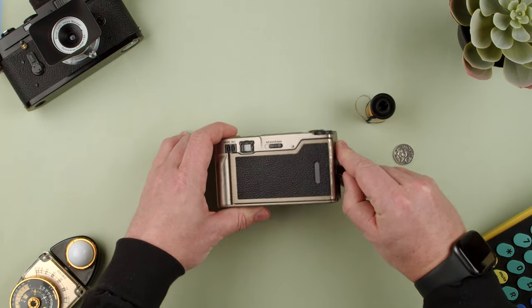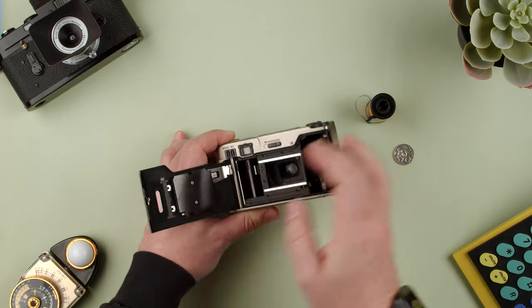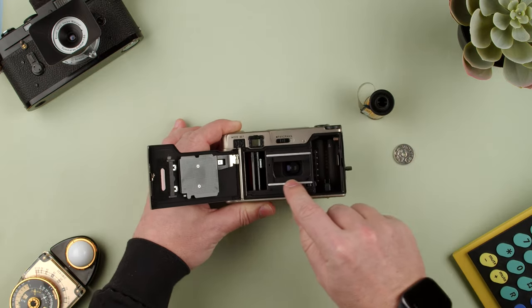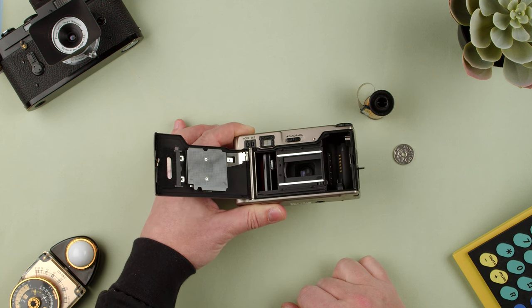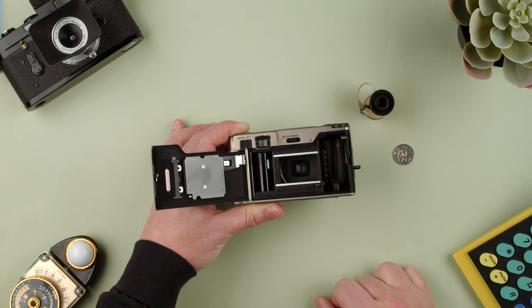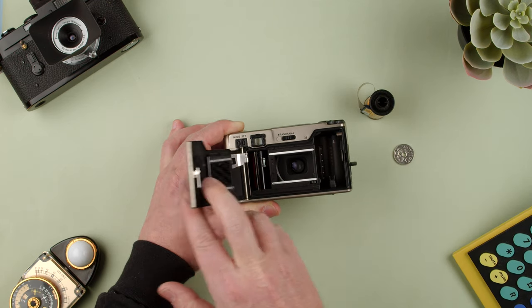If you want to see the panoramic mode, let me open it so you can see. When I push this, it creates a cropped panorama on the 35mm film. To pull it off, we push it the other way around and that's about it.